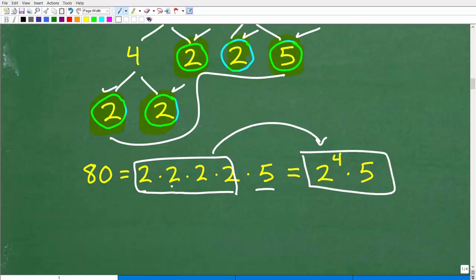If you look here, 2 times 2 times 2 times 2, or 2 to the 4th, this is 16. So 2 times 2 is 4, times 2 is 8, times 2 is 16. So 16 times 5, guess what? That is 80. But these are the prime factors.